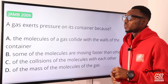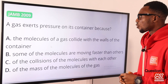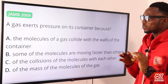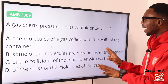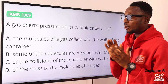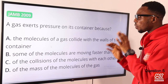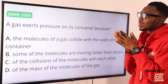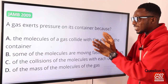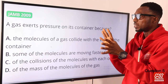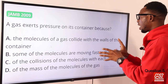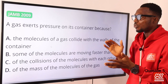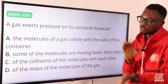Question 5: a gas exerts pressure on its container because the molecules of such a gas collide with the walls of the container. This collision with the walls of the container accounts for what we know as gas pressure. So option A — the molecules of the gas collide with the walls of the container — is the correct option.